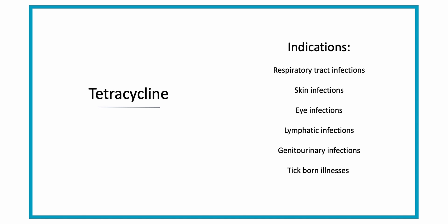Tetracycline can be used to treat infections that affect the respiratory system, skin infections, eye infections, lymphatic infections, genitourinary infections, and tick-borne illnesses — that's what it's indicated to be used with.